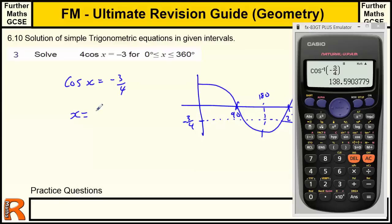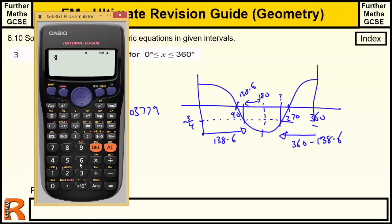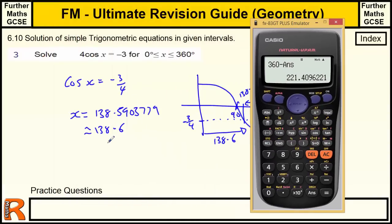And we get x equals 138.5903779, which is approximately 138.6. So that's this value here, 138.6. But we want all the values between 0 and 360, so we need to find this value as well, the other one here. We've got two ways of doing that. We can think about either how far away this is from 180, or we could just go how far in we've come this way and then just do the same back from 360. So we've come at 138.6 this way. So we want to do 360 minus 138.6. We might as well use the calculator, so we've got 360 minus our answer gives us 221.4.